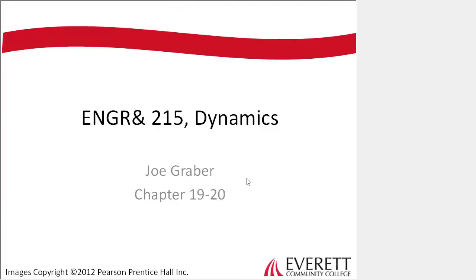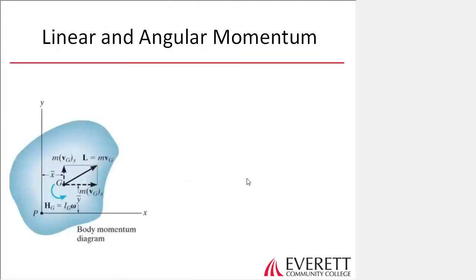We're moving to Chapter 19, and the very first thing we're going to cover, just like we did previously. If you remember when we first learned about kinematics, the first thing we learned was linear kinematics, then we learned angular kinematics which was rotation, and then we said they're related. Same thing we're going to do here. We're also going to learn about a new diagram called the body momentum diagram, which is very similar to the other diagrams we're used to — it's just dealing with momentum instead of kinetics.